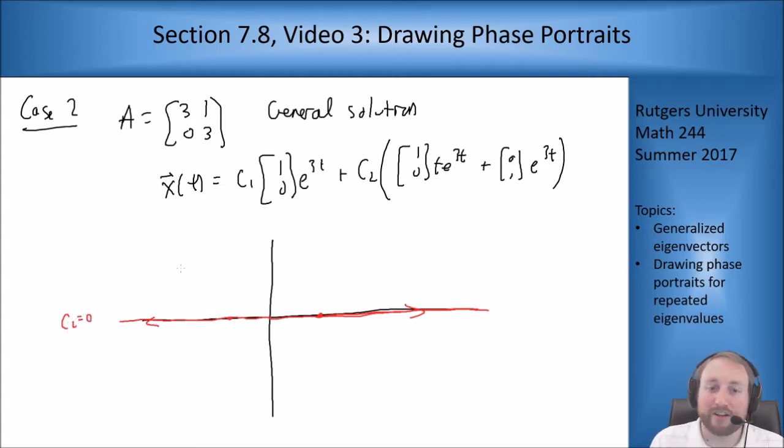Now to figure out what actually happens to the rest of them, I want to draw in what happens if c₁ is 0 and c₂ equals 1. So I want to draw out what this function looks like. In order to graph this guy I'm going to rewrite him in a little more suggestive way. I'm going to pull out e³ᵗ. This guy is the same as e³ᵗ times the vector [t;1]. If I pull out e³ᵗ this is what I get.